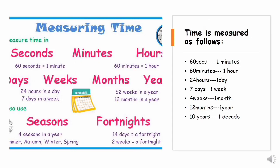Time is measured as follows: 60 seconds make one minute, 60 minutes make one hour, 24 hours make one day, 7 days make one week, 4 weeks make one month, 12 months make one year, 10 years make one decade.